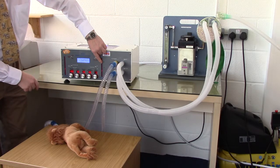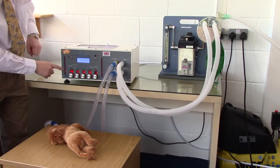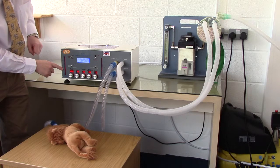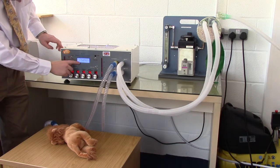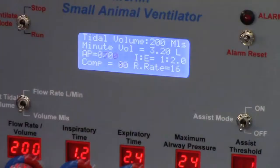See the inspiratory pressure rise on the right-hand side, and the expiratory port pressure rise on the left-hand side. On the screen are all the parameters of ventilation. The tidal volume is set to 200mls, and the minute volume is 3.2 litres, because the respiratory rate is 16 breaths per minute.